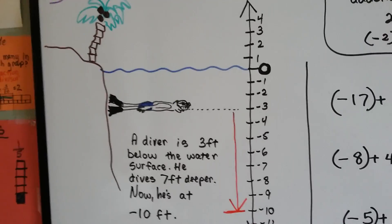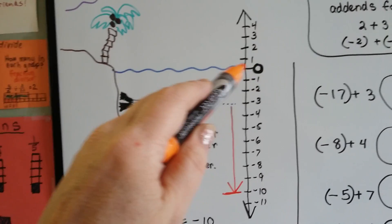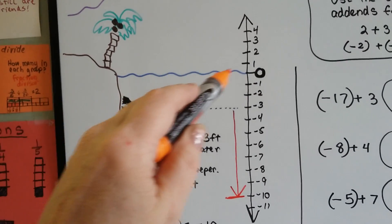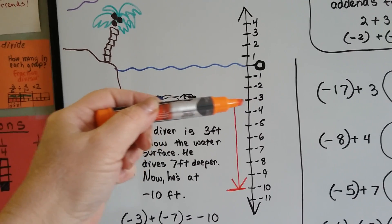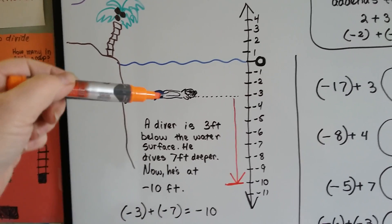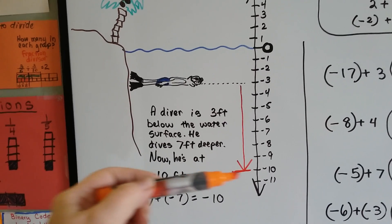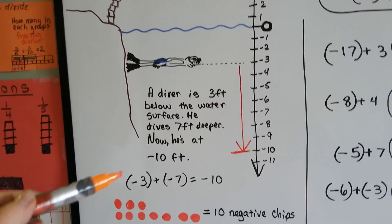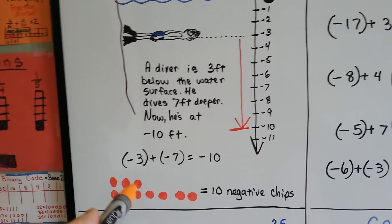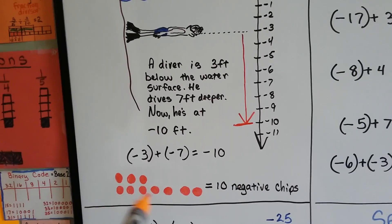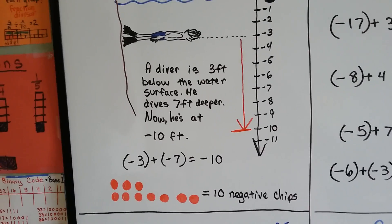We've got a diver on a tropical island. The water surface level is 0. He's 3 feet below the surface and he dives 7 feet deeper, so now he's at 10 feet below the surface. So negative 3 plus negative 7 is negative 10. We had negative 3 chips, we added negative 7 to it, so now we have 10 negative chips.